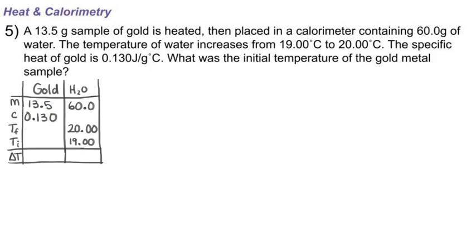The specific heat of gold is 0.130. What was the initial temperature of the gold metal sample? So we're being asked to find T initial, and before we do that we're also going to have to find our Delta T value. We know that the final temperature of the gold is going to be the same as the water because things come to an equilibrium state, so the final temperature of the gold is also 20.00. We also know the specific heat of liquid water is 4.184.